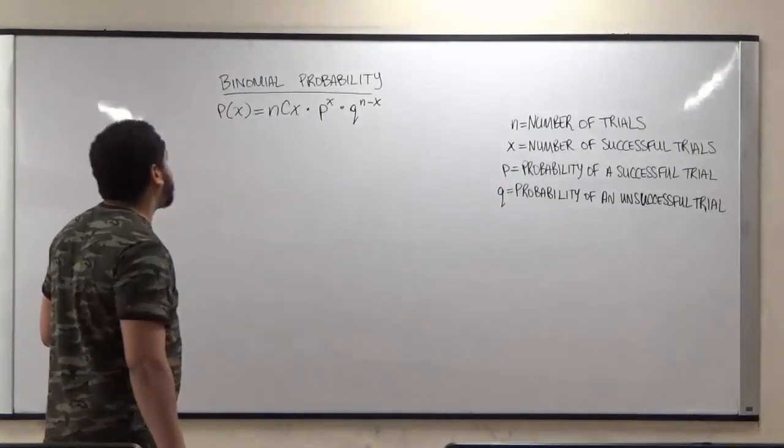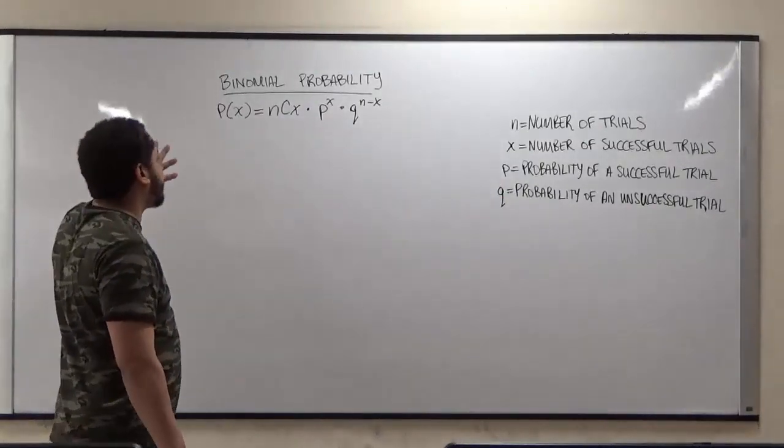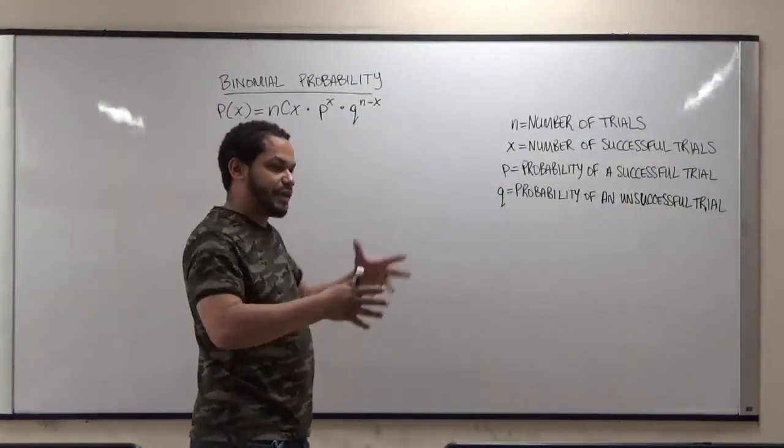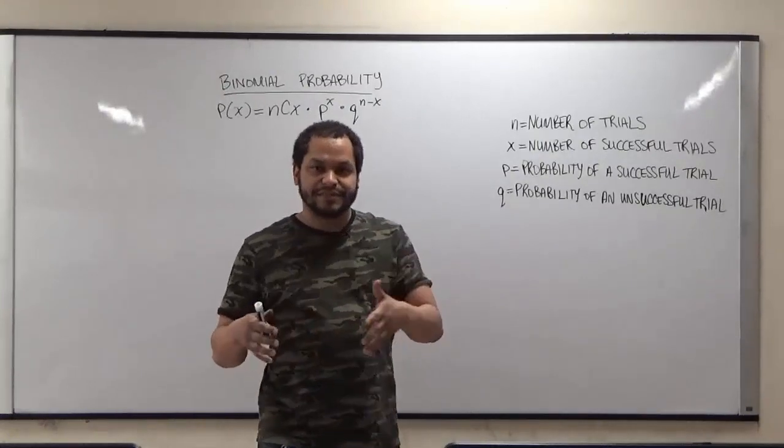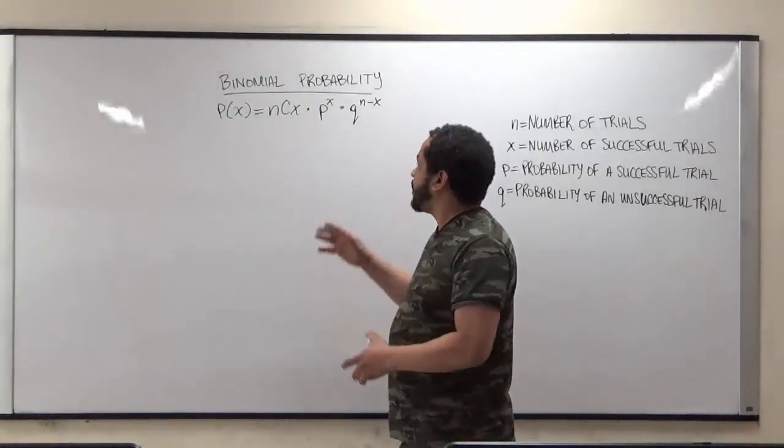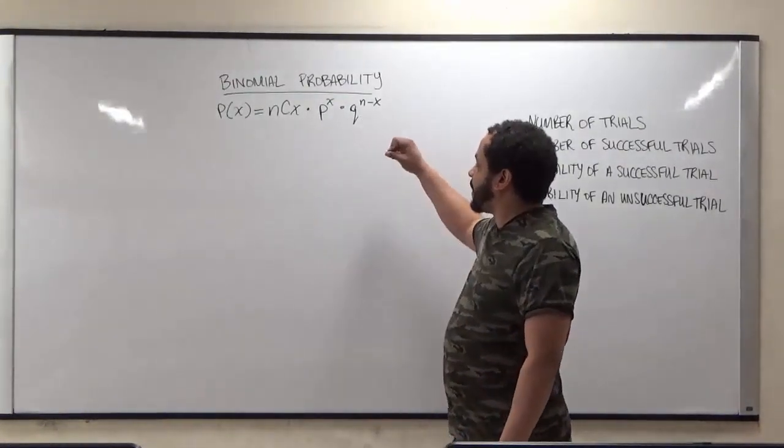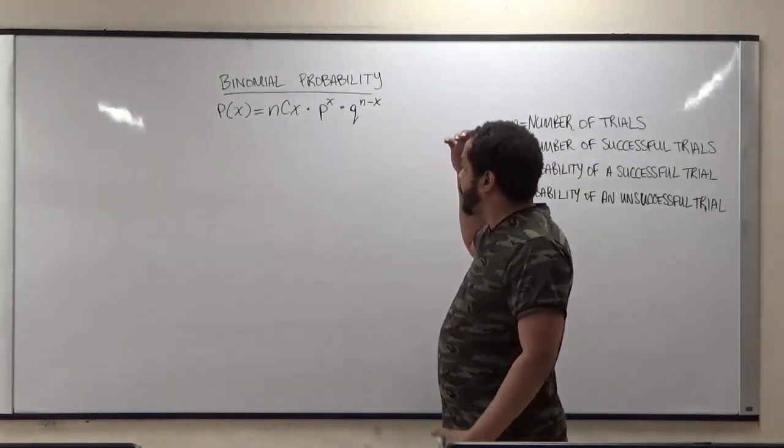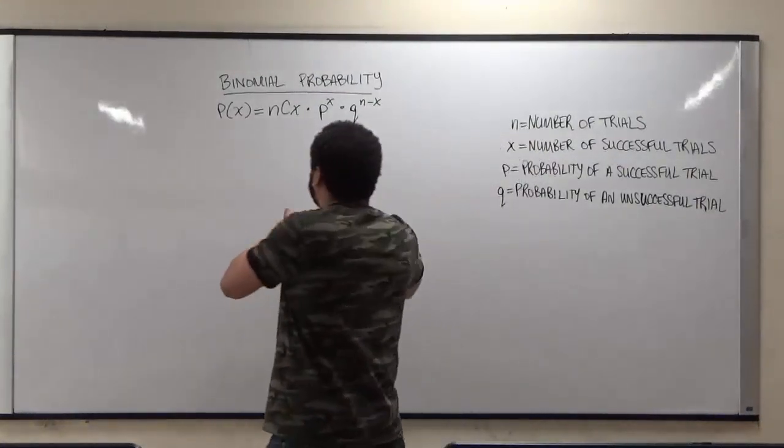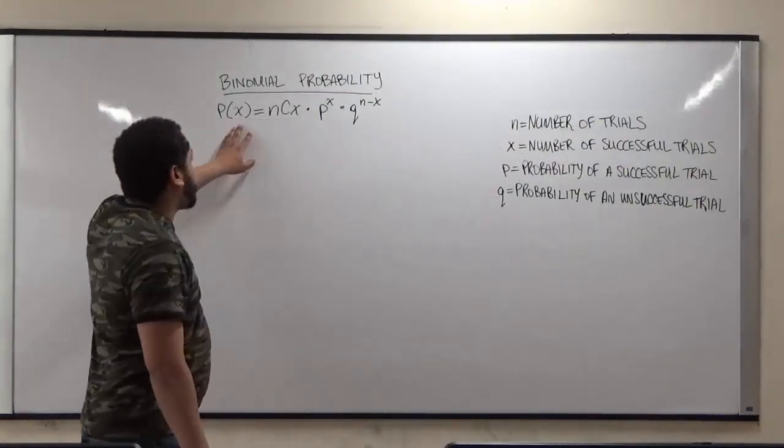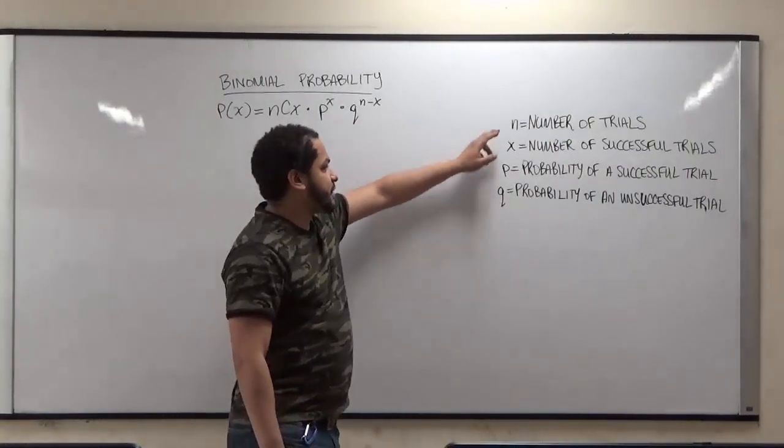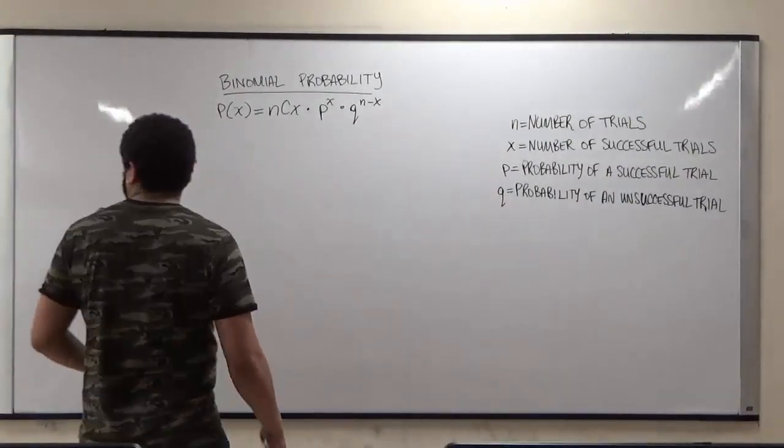And there's many ways that we could evaluate how the function actually works, by doing it the long way and combining how many ways different events can occur. So for the most part, what we're looking at here is a function of x, and that function of x is based on these p's, the q's, and the number of successful trials.